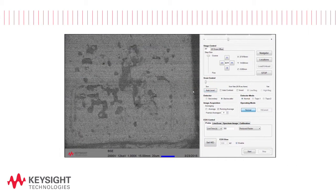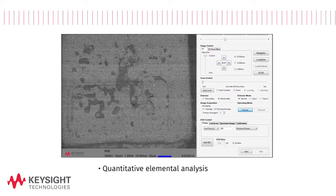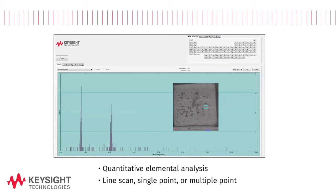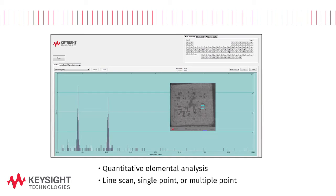The 8500B enables quantitative elemental analysis to be performed on a selected area, line scan, single point or multiple points via energy dispersive spectroscopy.